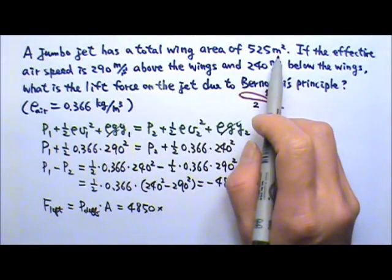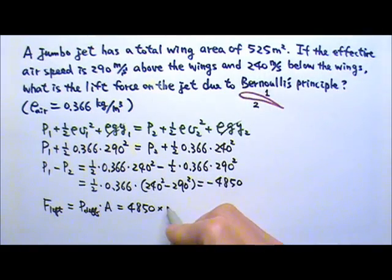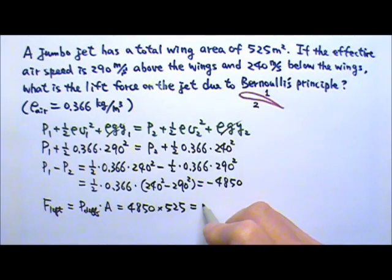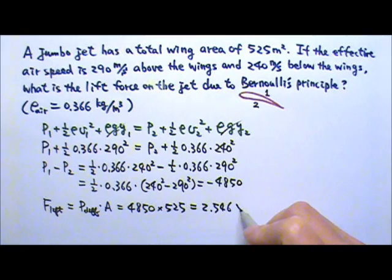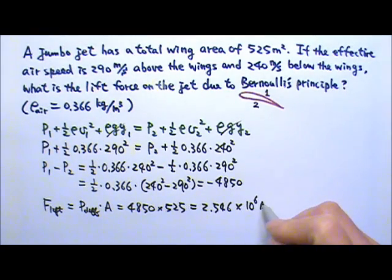This wing area includes both wings, so it's just 525. And this will give us, if I round it, I'll get 2.546 times 10 to the 6 Newtons.